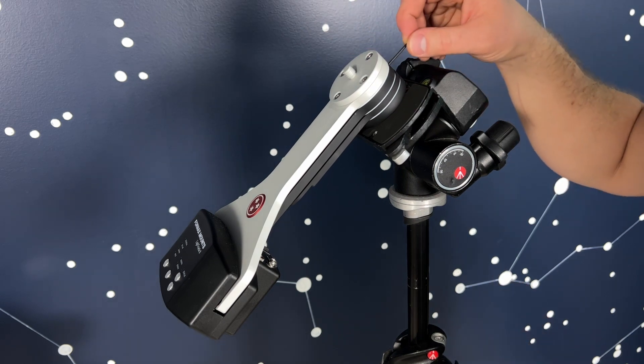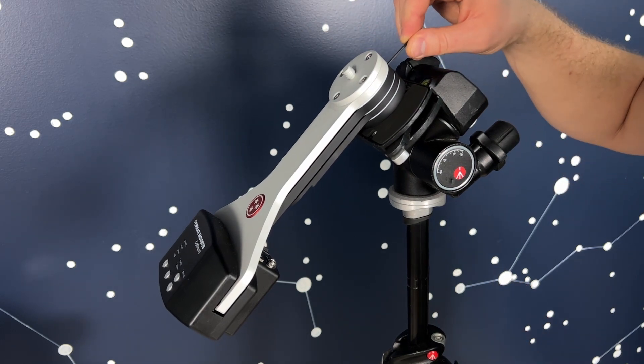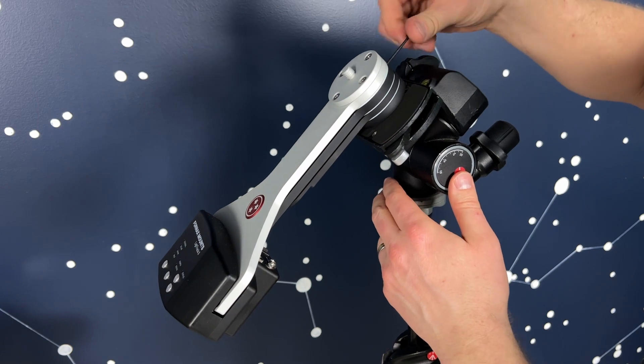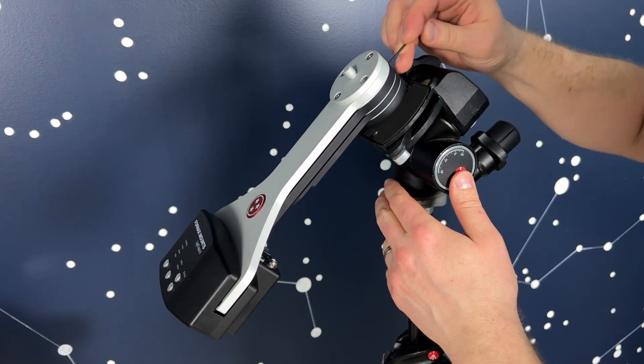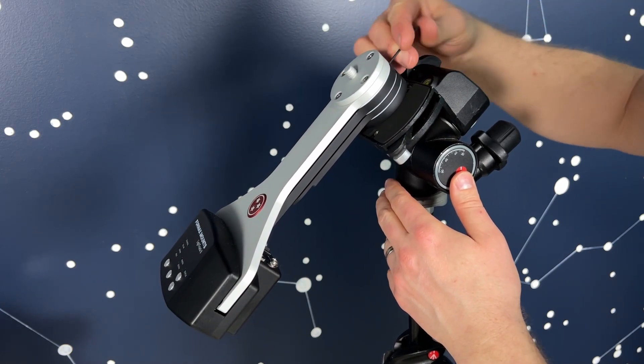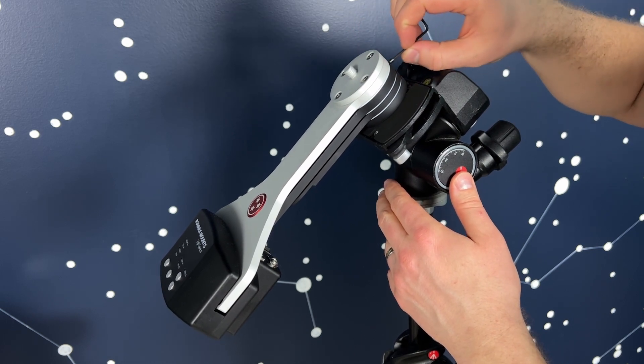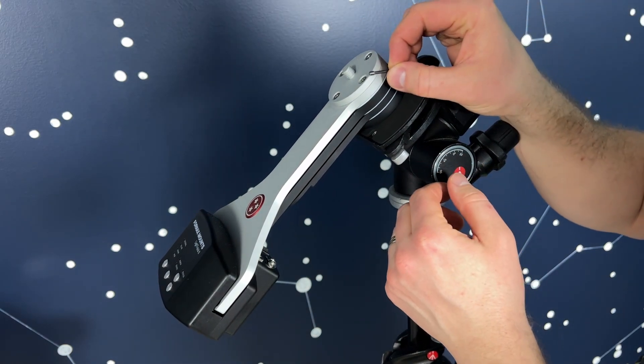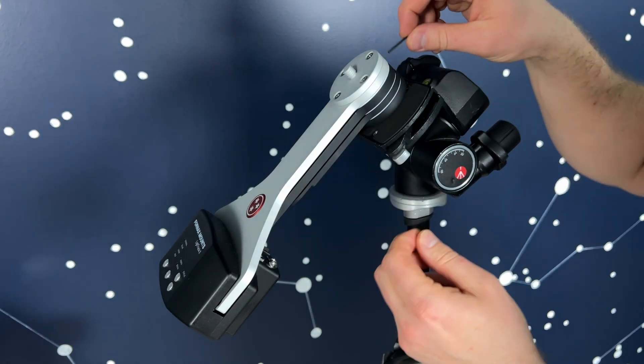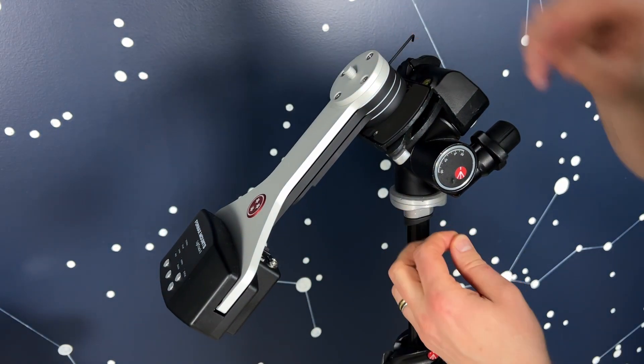All you do is remove the set screw that is inside this hole. Try not to lose it, it's a little guy, and there's actually a second one inside.